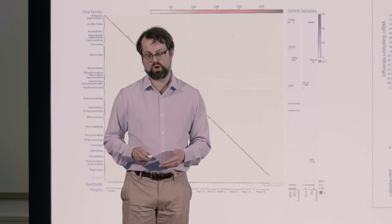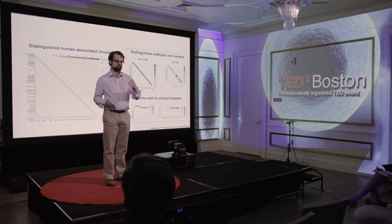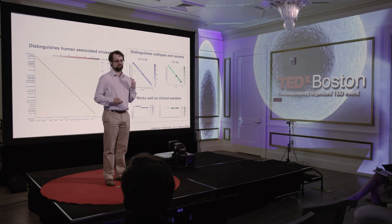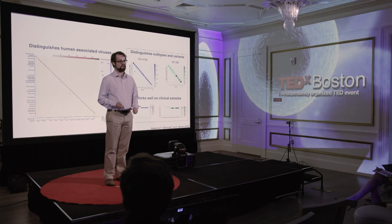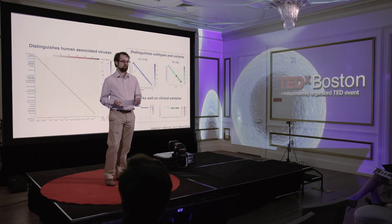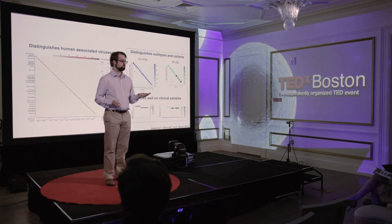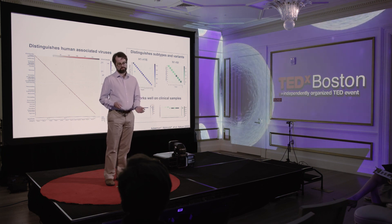Our method also works well on clinical samples. What you can probably tell, even just looking at the slide from a distance, is that there are two groups of samples that clearly come out of our analysis — these are from patients. The samples we identified were either H1N1 or H3N2, which are the two subtypes of influenza that infect people.